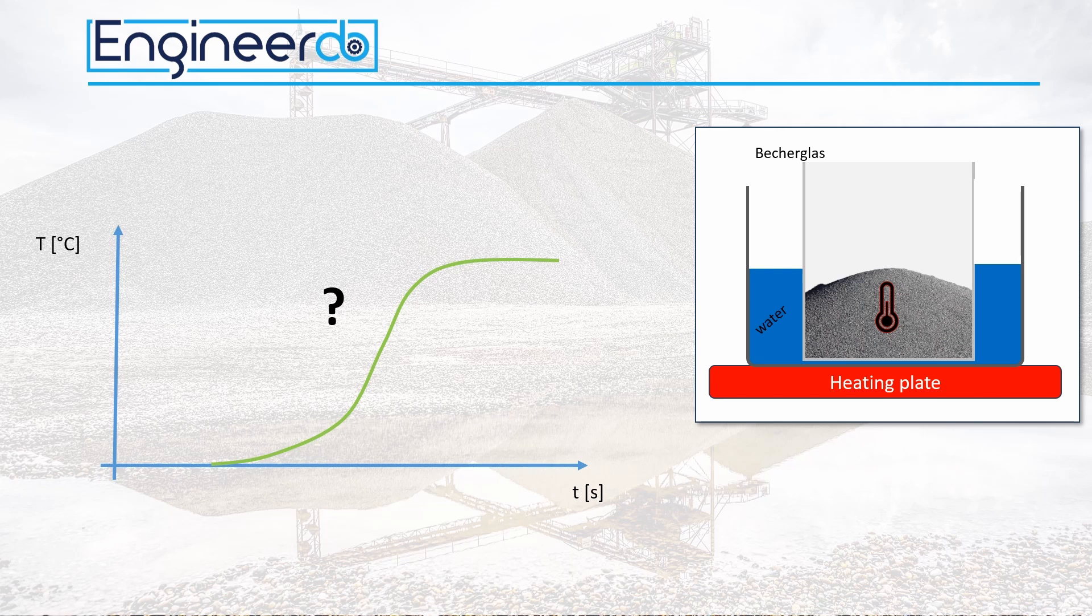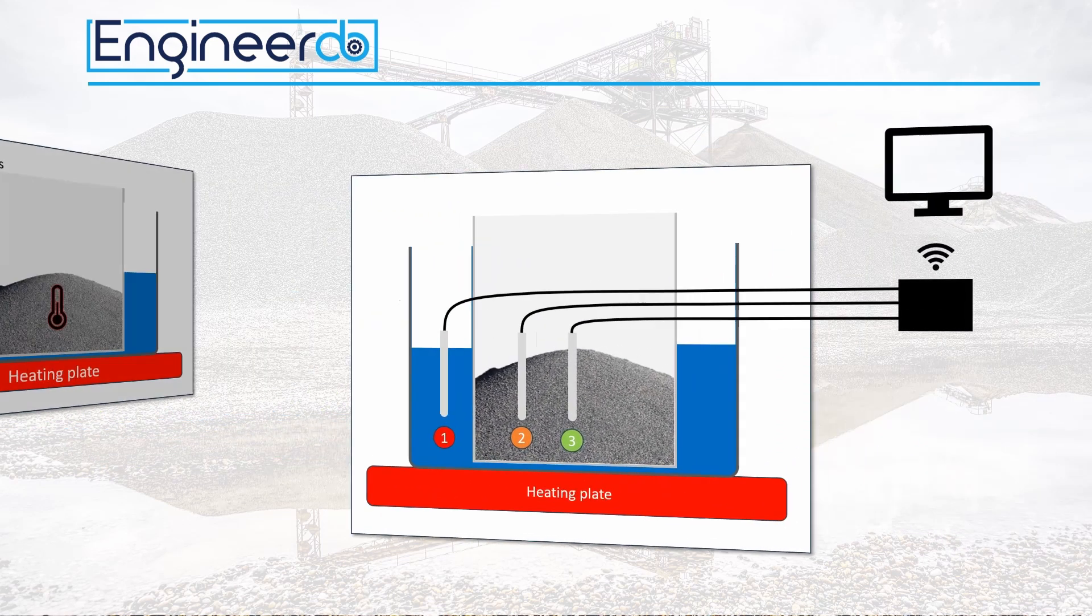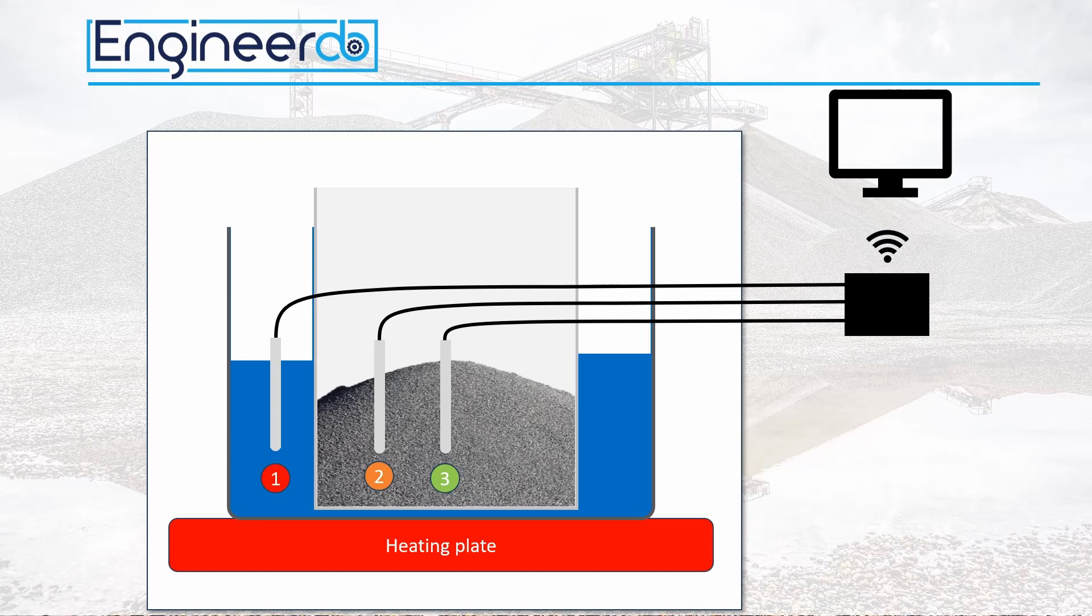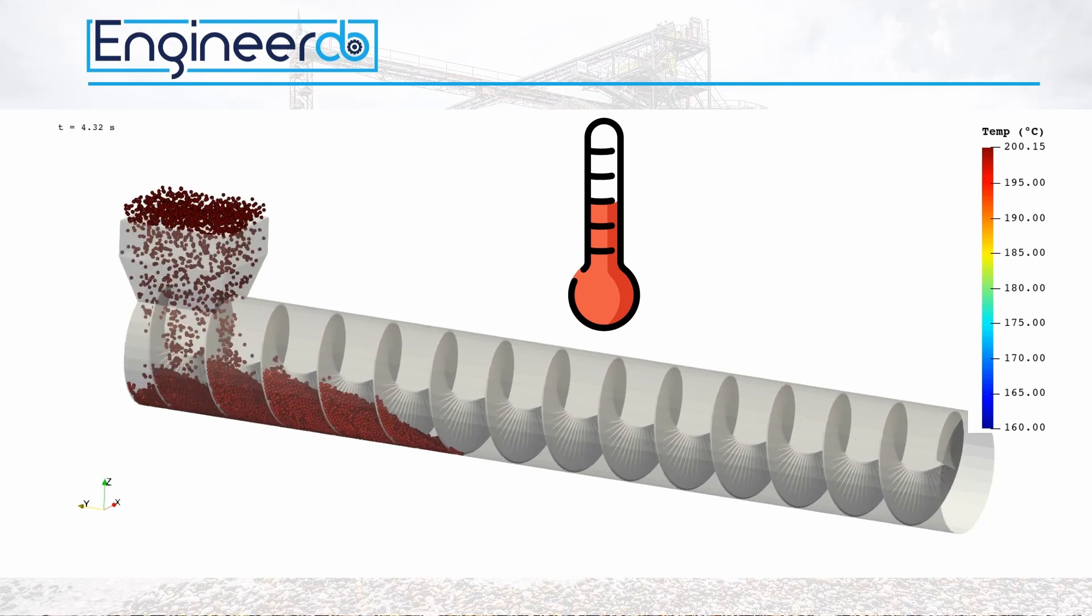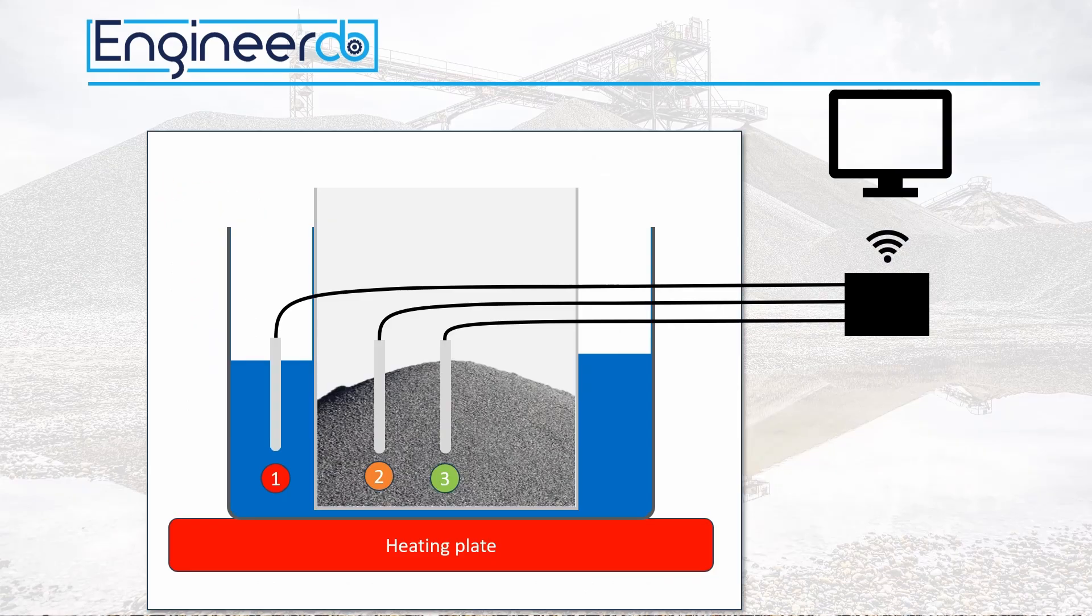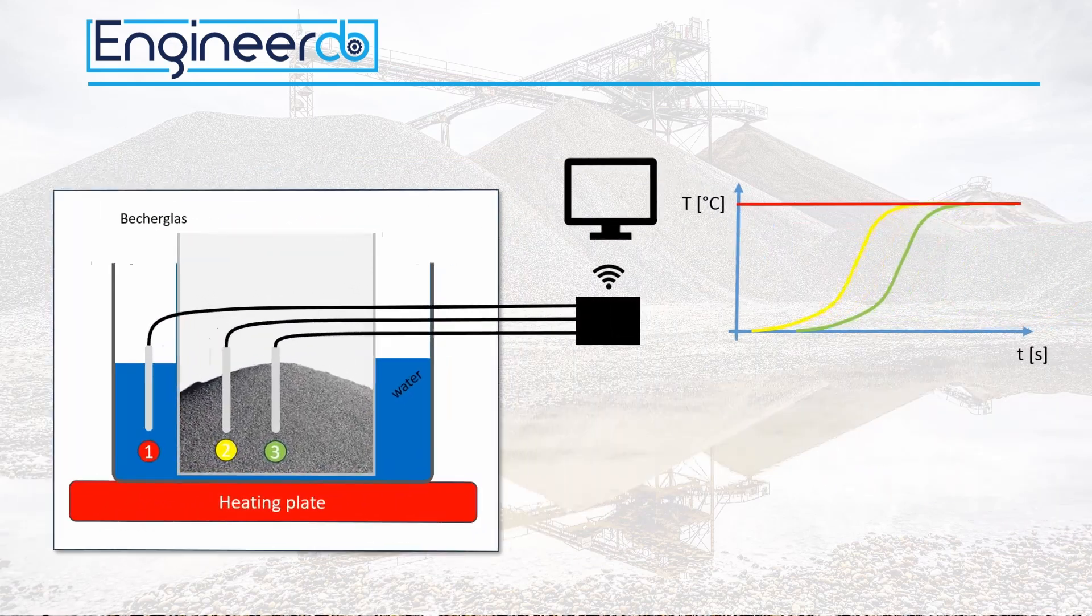Now it is clear that we have to make an experiment to measure the bulk material heat conductivity to know the real physics of our specific bulk material. After this, we have to tune the simulation in a way to show the same behavior. That's called calibration. To start, let's take a closer look at the experimental setup.